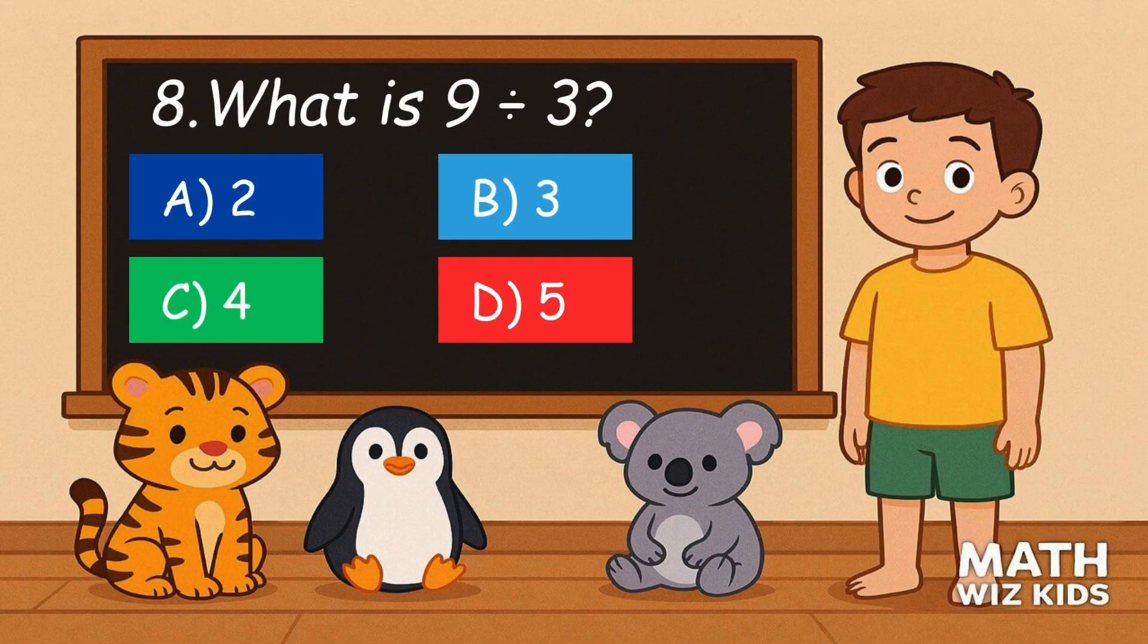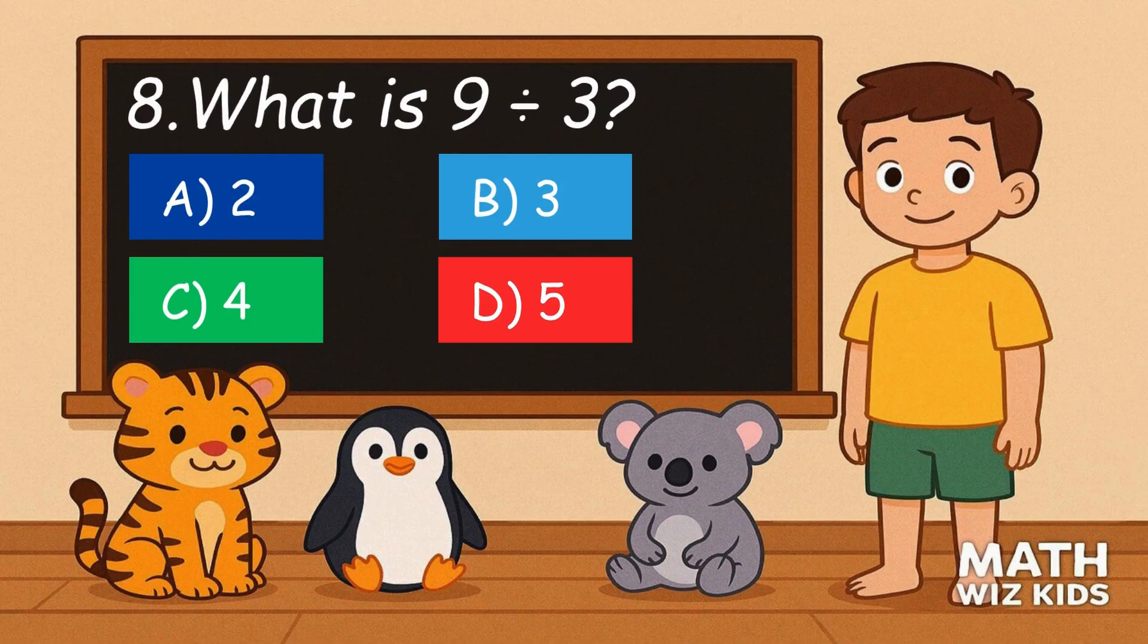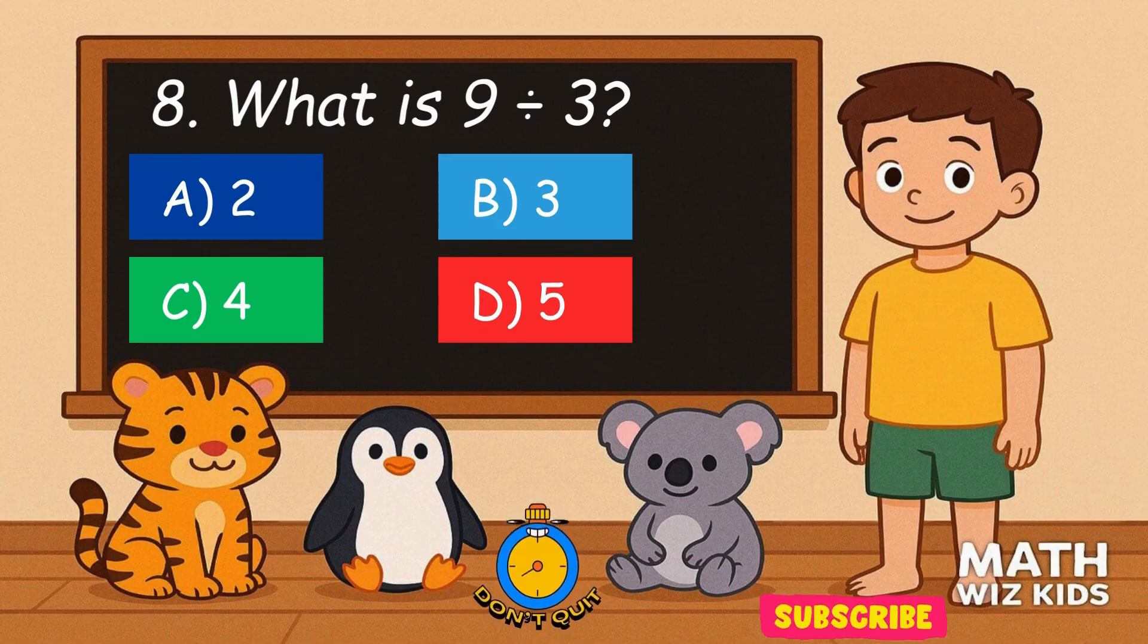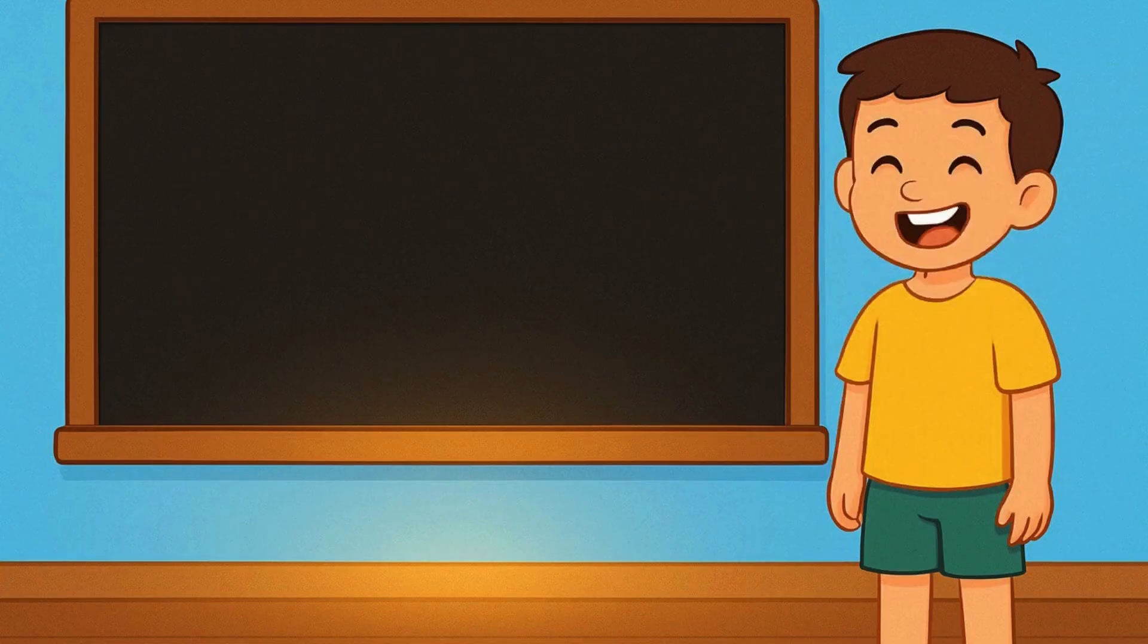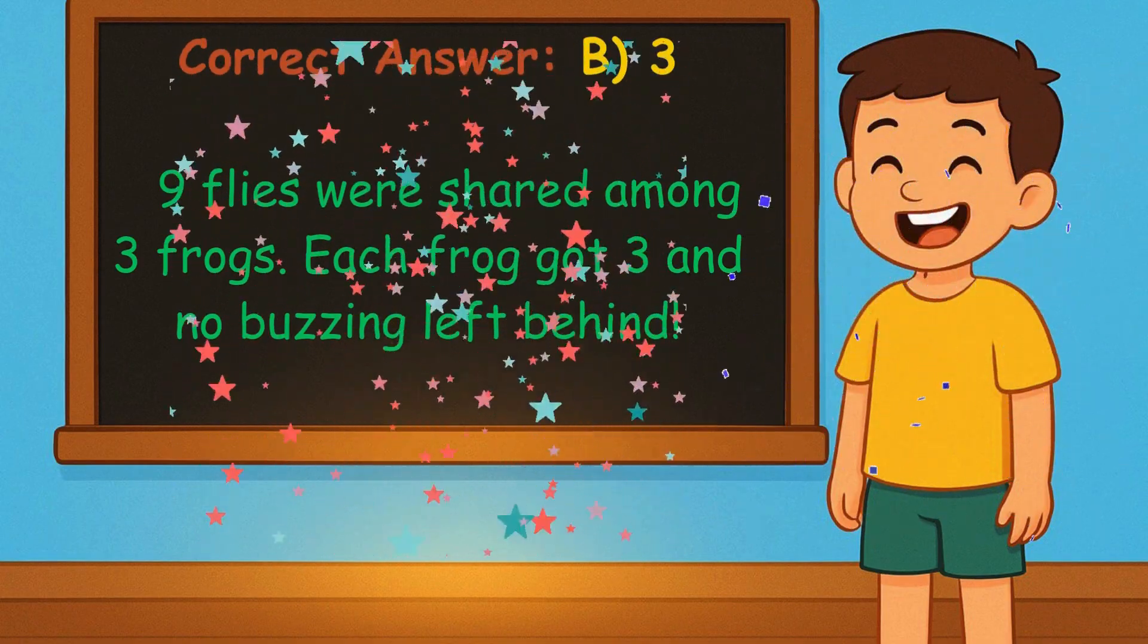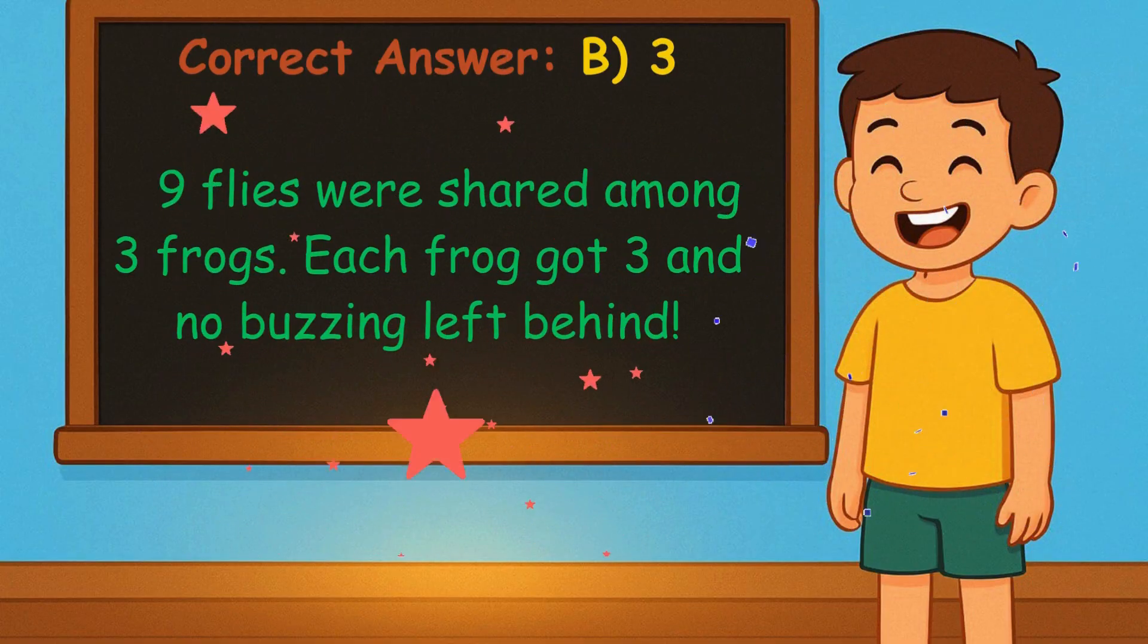8. What is 9 divided by 3? Is it A, 2, B, 3, C, 4, or D, 5? Correct answer is 3. Nine flies were shared among three frogs. Each frog got 3, and no buzzing left behind.